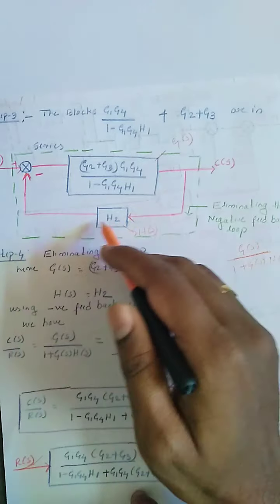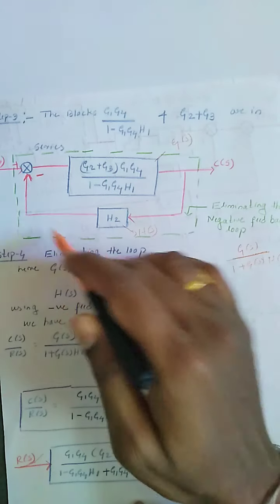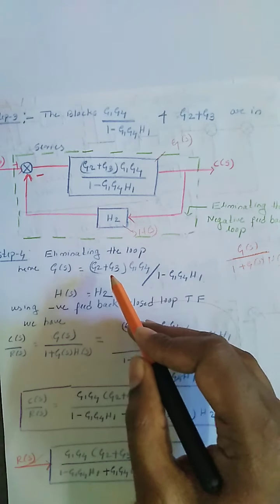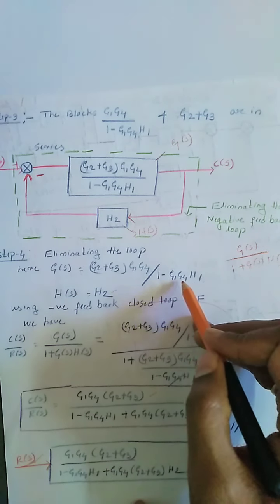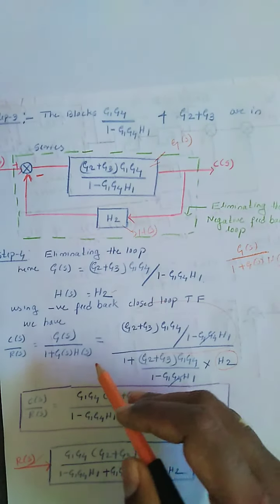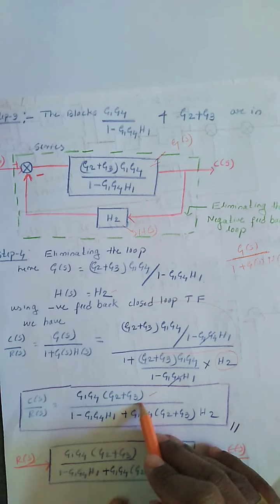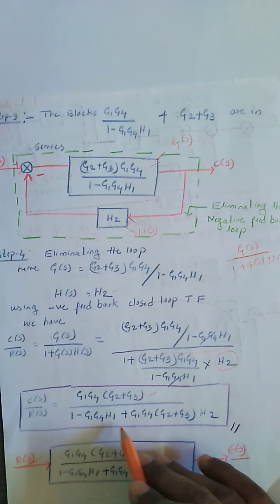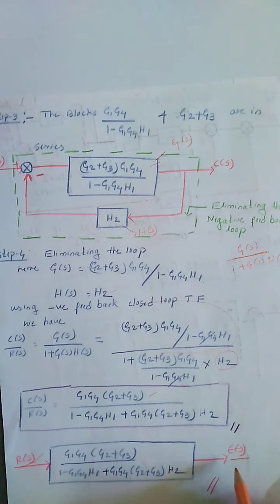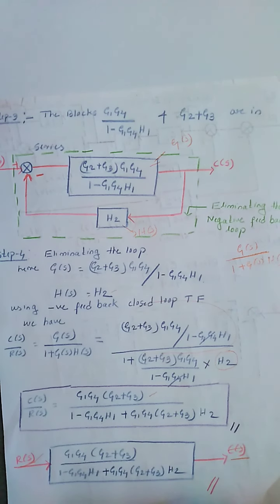The output of this block is connected to the summing point through the feedback element H2, forming another loop. Eliminate this loop using the closed loop transfer function, where G(s) equals (G2+G3)·G1·G4/(1 minus G1·G4·H1) and H(s) is H2. After substituting all values, the overall transfer function reduces to G1·G4·(G2+G3) divided by (1 minus G1·G4·H1 plus G1·G4·(G2+G3)·H2). This block is connected between the output C(s) and the input R(s). This is all about the block diagram problems.